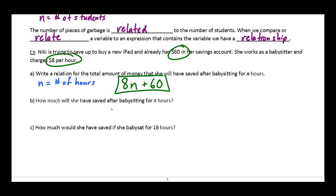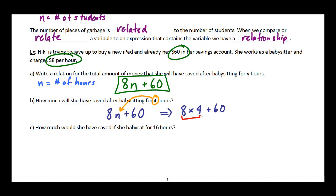Now they ask how much will she have saved if she babysits for 4 hours. We evaluate the expression 8n + 60 by substituting n = 4. So this becomes 8 times 4 plus 60. Following BEDMAS, multiplication comes before addition, so we do 8 times 4 first: that's 32. Then 32 plus 60 gives us $92.